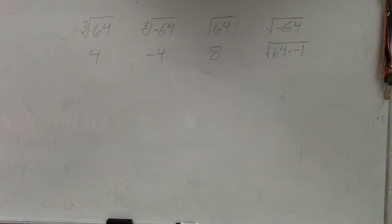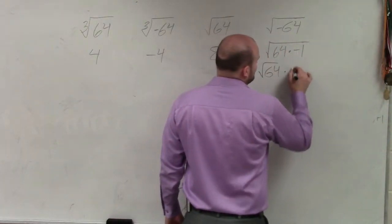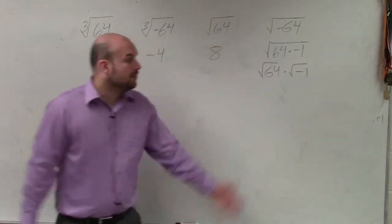So by breaking that up, though, what that allows us to do is to utilize the definition of our imaginary unit. So now I can break this up into the square root of 64 times the square root of negative 1. Well, the square root of positive 64, we already know that's 8.